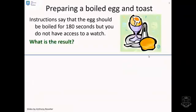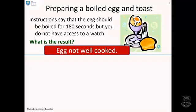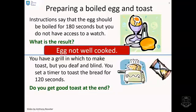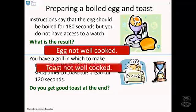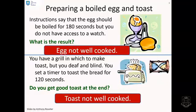Some other examples, preparing a boiled egg and toast. The instructions say the egg should be boiled for 180 seconds, but you do not have access to a watch. So you're going to guess, was it the right time? Well, in all likelihood, your egg will not be well cooked. It will be either undercooked or overcooked. You have a grill to make toast, but you're deaf and blind. So you set a timer to toast the bread for exactly 120 seconds. Are you going to get good toast at the end? Well, probably not because 120 seconds might not be the right time.